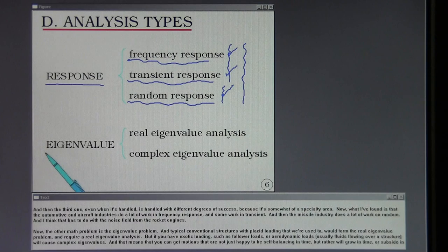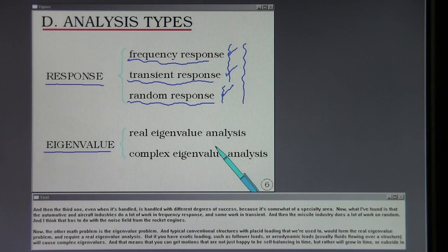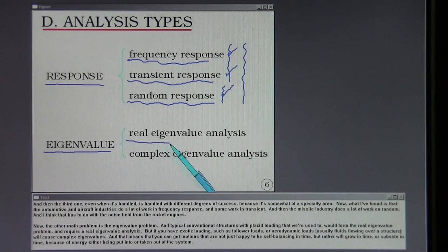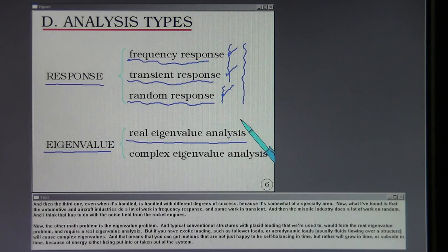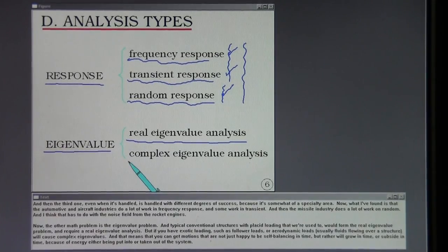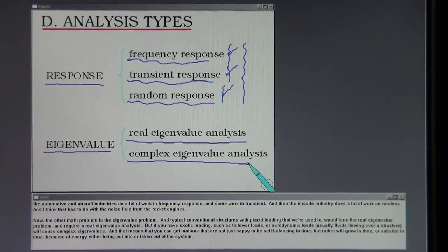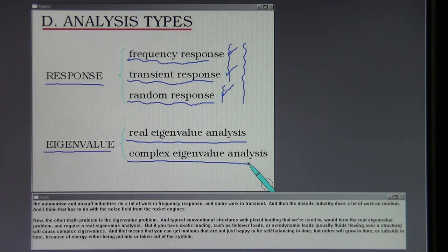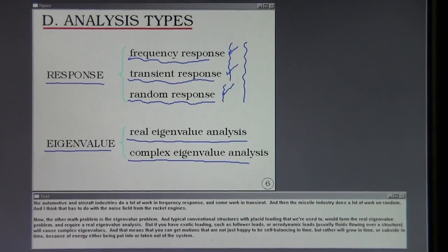The other math problem is the eigenvalue problem. Typical conventional structures with placid loading would form the real eigenvalue problem and require a real eigenvalue analysis. But if you have exotic loading, such as follower loads or aerodynamic loads, usually fluids flowing over a structure will cause complex eigenvalues. That means that you can get motions that are not just happy to be self-balancing in time, but rather will grow in time or subside in time because of energy either being put into or taken out of the system.